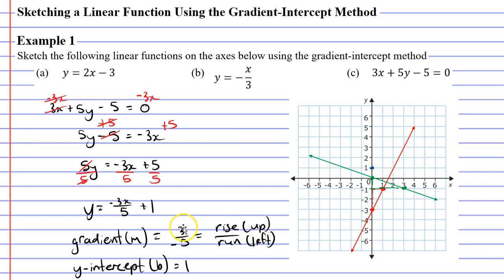We're going to move up 3 squares then to the left 5 squares. 1, 2, 3, 4, 5. We now have our 2 points. All we need to do now is draw a line that passes through these 2 points.